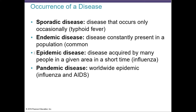Pandemic would be a worldwide epidemic. A pandemic is considered when an epidemic has already spread into multiple countries and multiple continents. For example, when we started to see the spread of COVID-19, it started as an epidemic, and then started to spread from country to country until the CDC defined it as a pandemic.